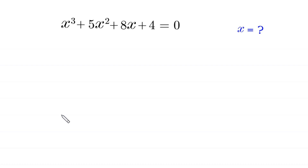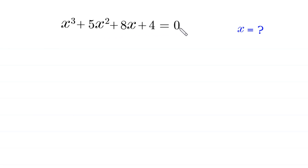Hello, welcome to how to solve this very nice cubic equation: x cubed plus 5x squared plus 8x plus 4 is equal to 0. We need to find all possible values of x.